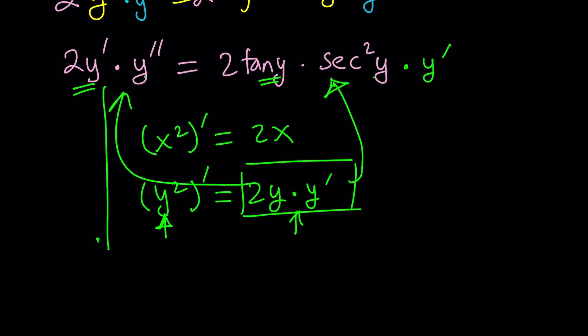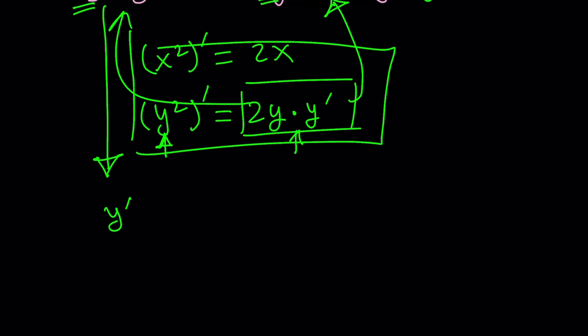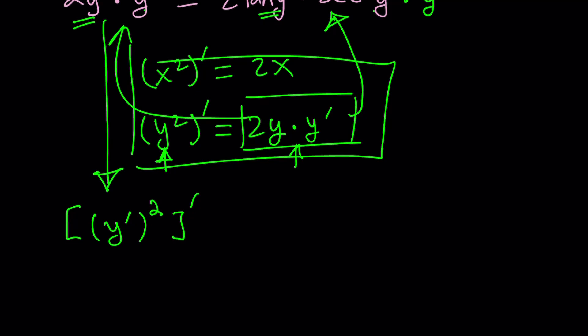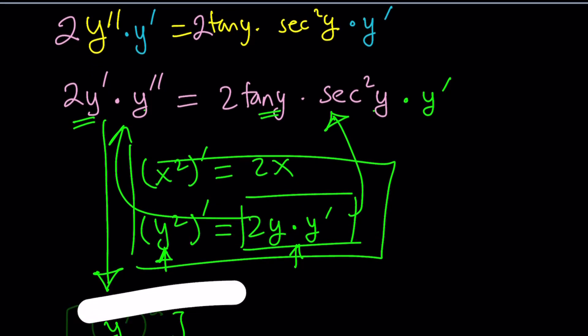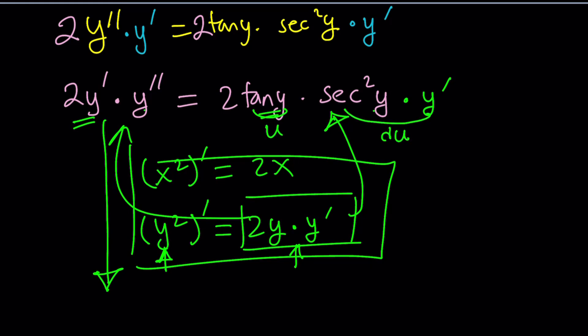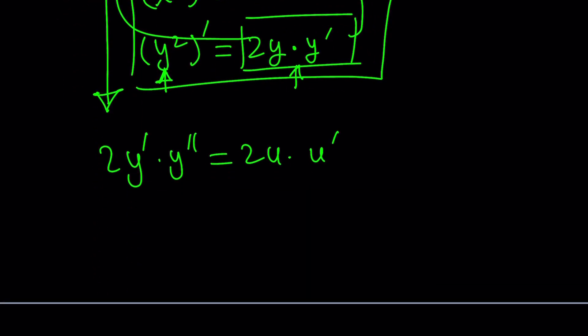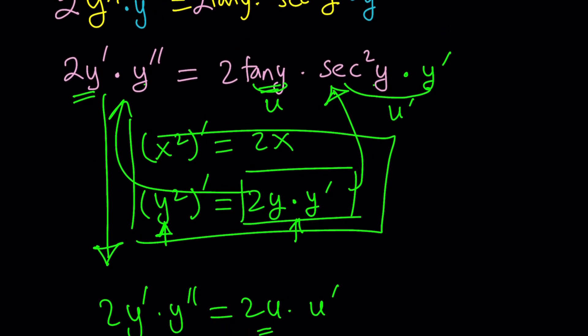The left hand side here, if you look at this very carefully, this is the derivative of y prime squared. So, on the left hand side, we have the derivative of y prime squared. And on the right hand side, we have the derivative of u squared. This one actually can be turned into, this is u and this is u prime. That's basically kind of like 2y prime times y double prime equals 2u times u prime.